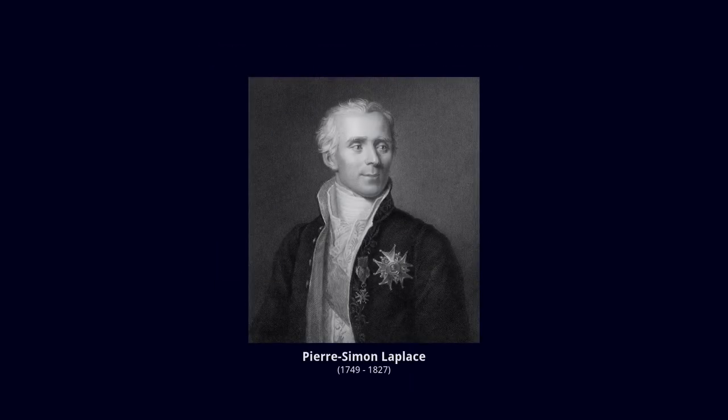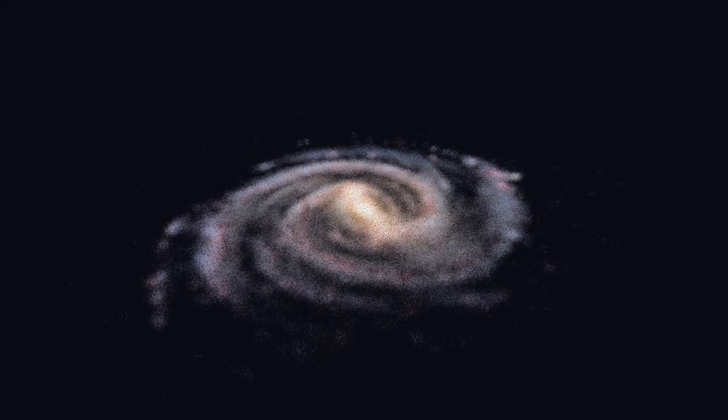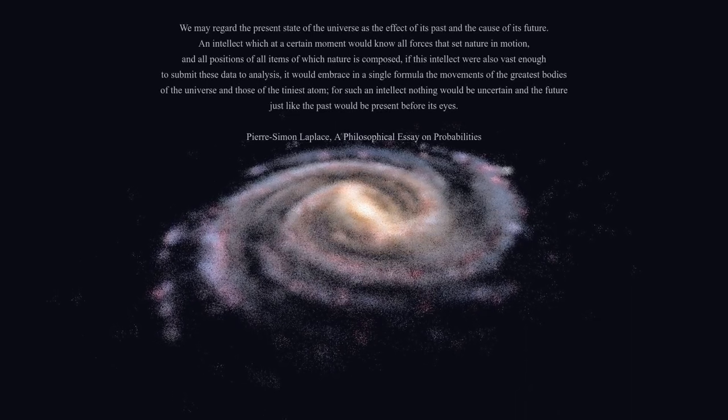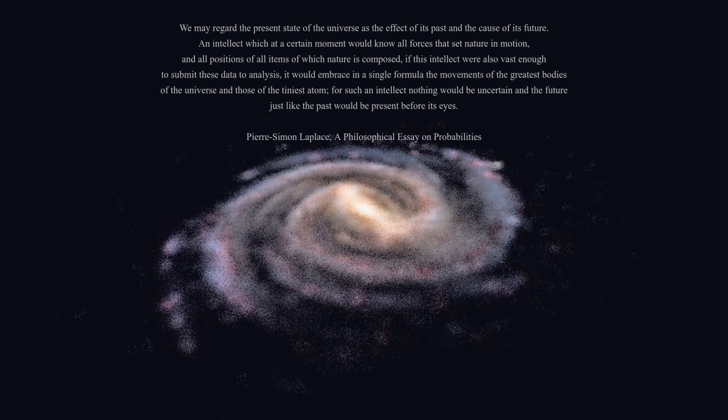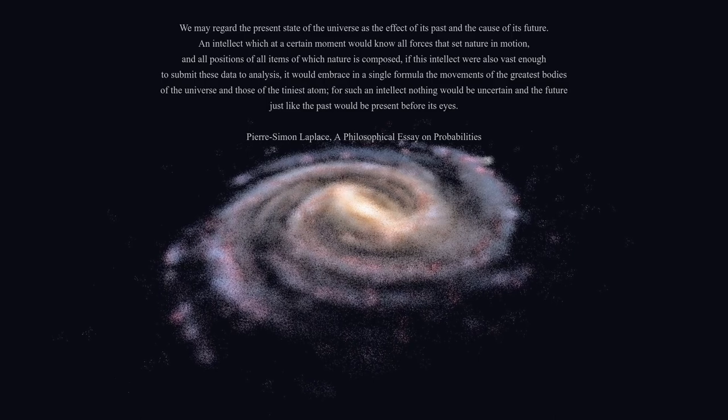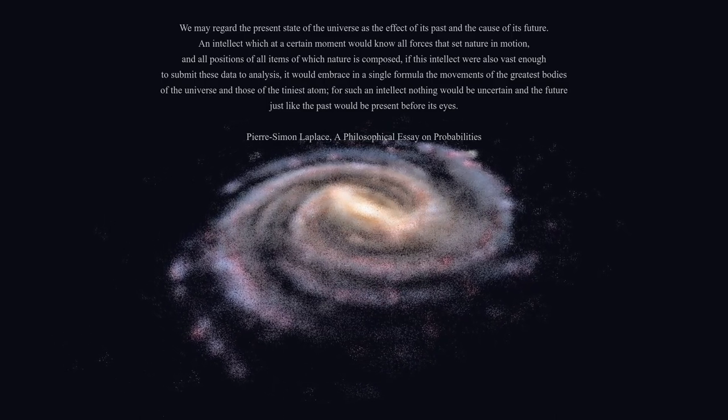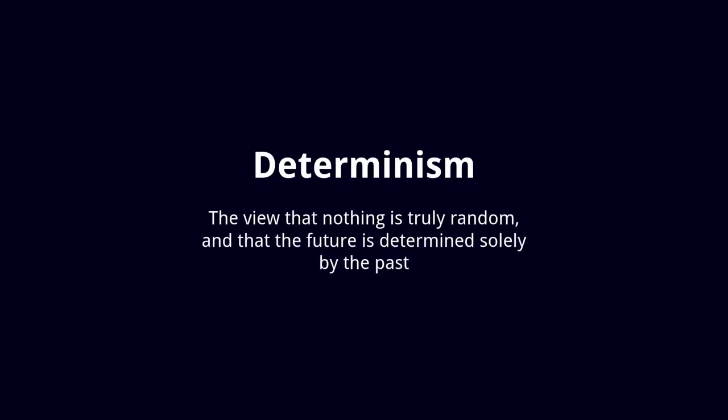In the early 19th century, philosopher Pierre-Simon Laplace came up with a theory. He thought that if you know the exact state of everything in the universe, every galaxy, every star, every planet, and every single atom, you would be able to calculate the future with complete certainty. This view is known as determinism, that the future is already predetermined and nothing is left to chance.